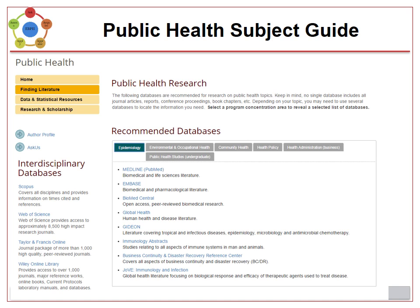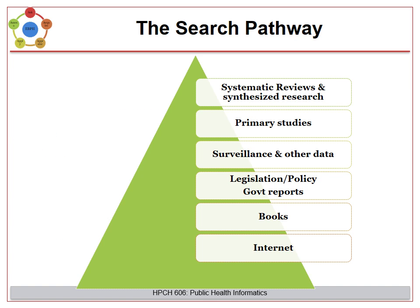Click on Finding the Literature to see the recommended databases across different disciplines within public health, provided as tabs across the top. This figure is a generalized way of thinking about the available evidence. First listed is systematic reviews and other synthesized research, followed by primary studies, surveillance and other data, legal and policy documents, books, and lastly, internet searches.